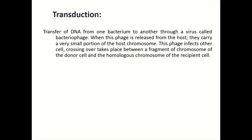The next process is transduction. Transduction is also used for sexual reproduction by bacteria. It is the transfer of DNA from one bacterium to another through a virus called bacteriophage. When the phage is released from the host, it carries a small portion of the host chromosome. The phage then infects other cells, and crossing over takes place between a fragment of the chromosomes of the donor cell and the homolog chromosome of the recipient cell.